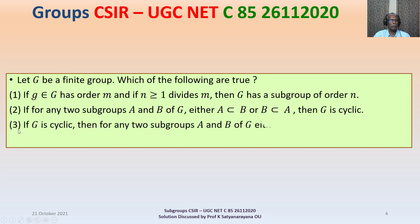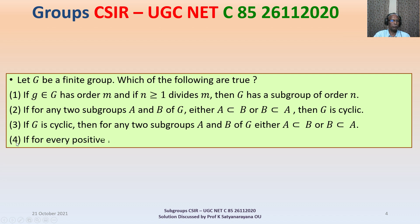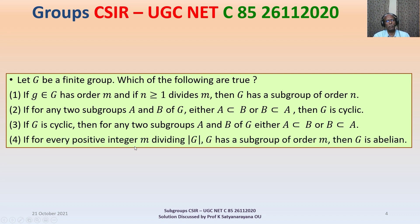Option 3: if G is cyclic, then for any two subgroups A and B of G, either A is contained in B or B is contained in A. Option 4: if for every positive integer M dividing the order of G, G has a subgroup of order M, then G is abelian.